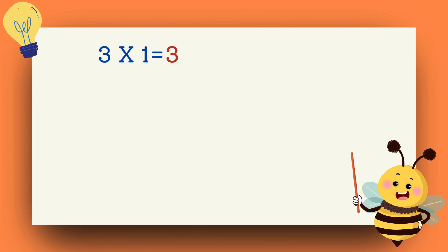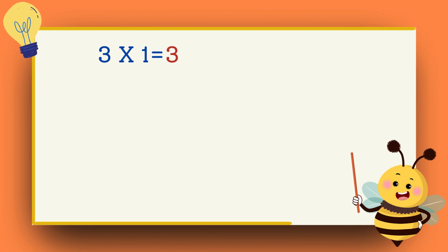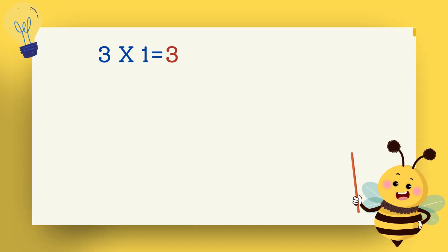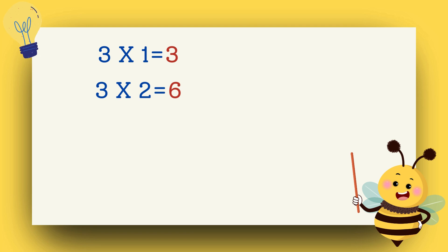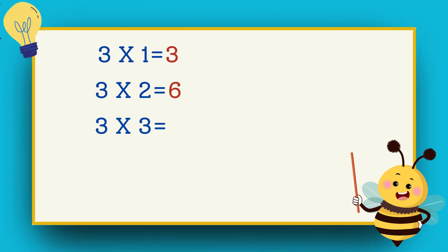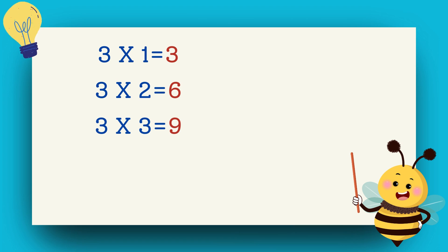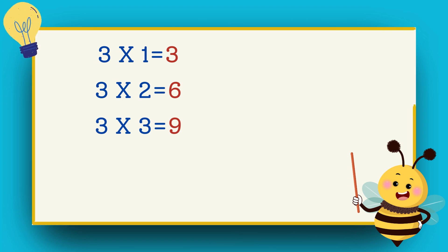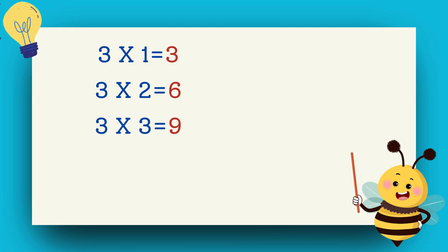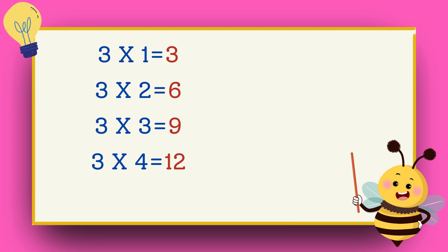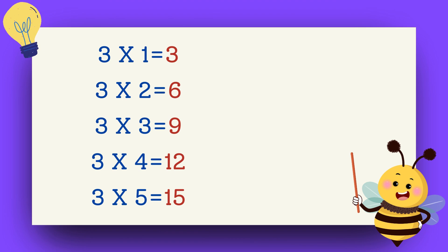Three ones are three. Three twos are six. Three threes are nine. Three fours are twelve. Three fives are fifteen.